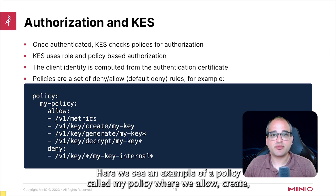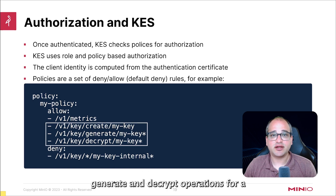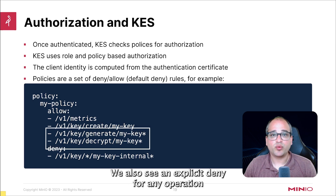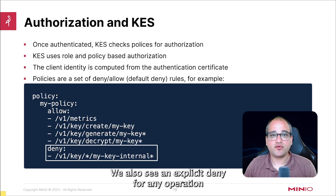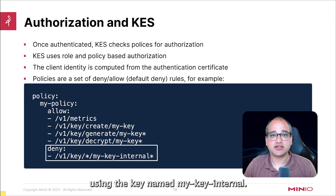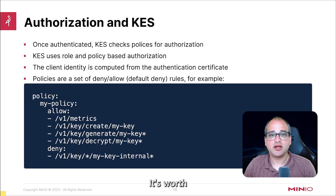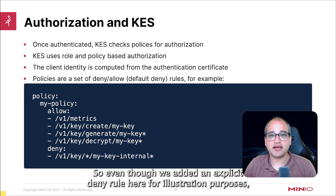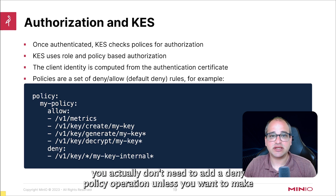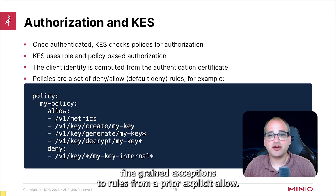Here we see an example of a policy called myPolicy, where we allow create, generate, and decrypt operations for a key named myKey. We also see an explicit deny for any operation using the key named my-key-internal. It's worth noting that KES policies are implicit deny, so even though we added an explicit deny rule here for illustration purposes, you actually don't need to add a deny policy operation unless you want to make fine-grained exceptions to rules from a prior explicit allow.